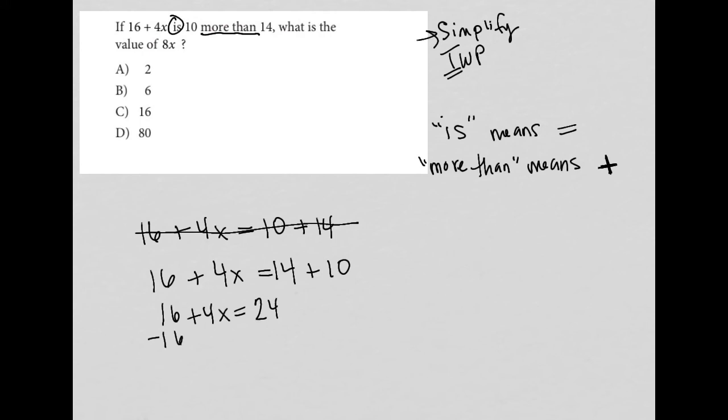I'm going to subtract 16 from both sides in order to isolate my x term. So I end up with 4x is equal to 8 and move up here for more space. So with the 4x equals 8, I then divide both sides by 4 and I have x is equal to 2.